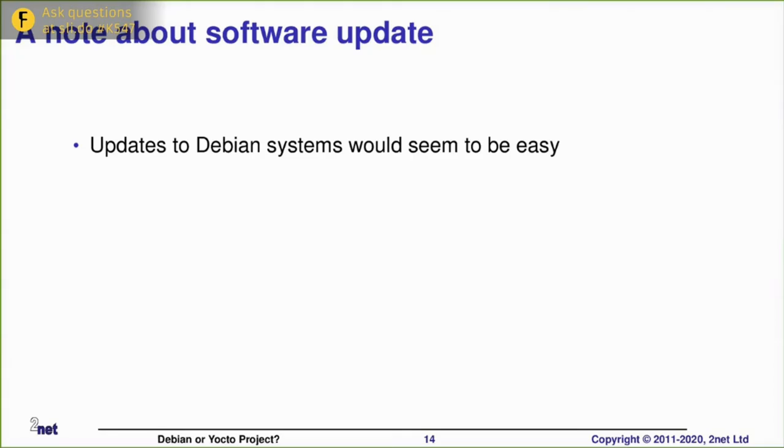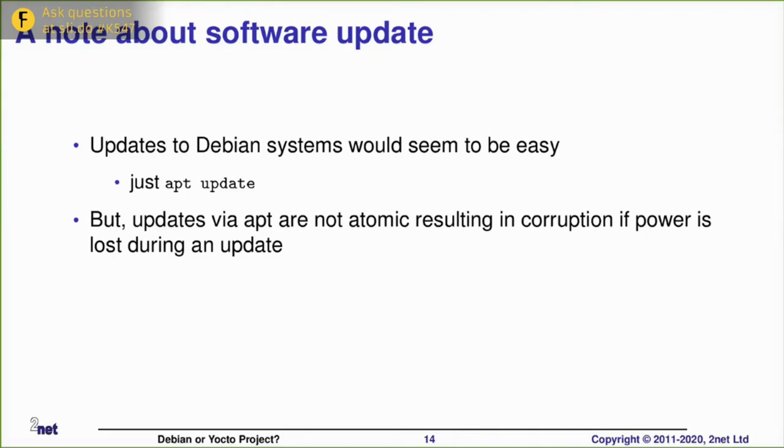This is slightly off topic, but I want to say a quick thing about software updates. This is a common thing we need once we start shipping our products. Chances are we're going to want to be able to update them either over the air or even just directly using a USB stick. With Debian and similar distros, it would seem to be fairly easy. You just run apt-update to update to a later version and you can apt-get any additional packages that you want. But be aware that this is not a complete solution, or at least not in all cases. The problem with package-based update is that the updates themselves are not atomic.